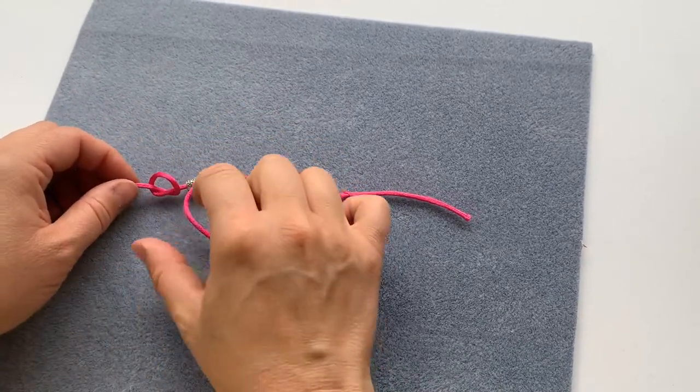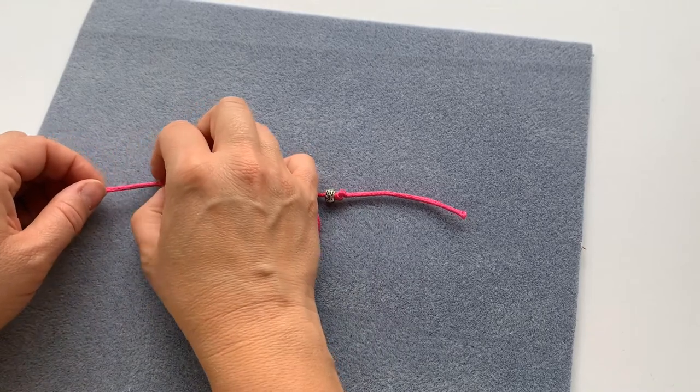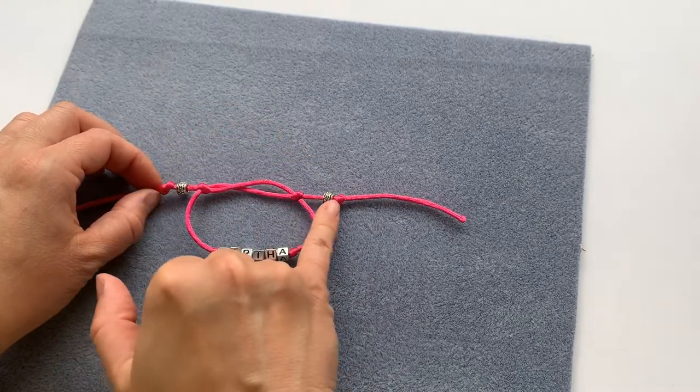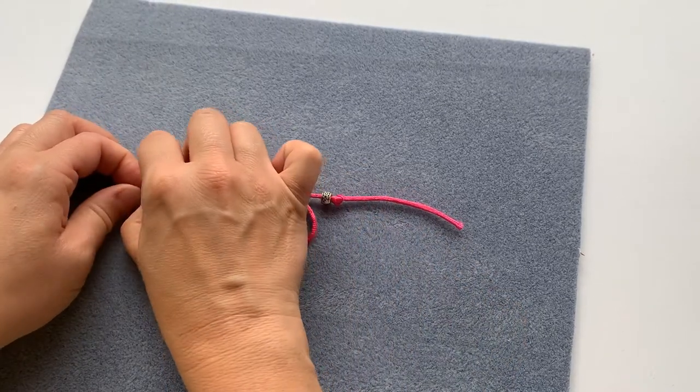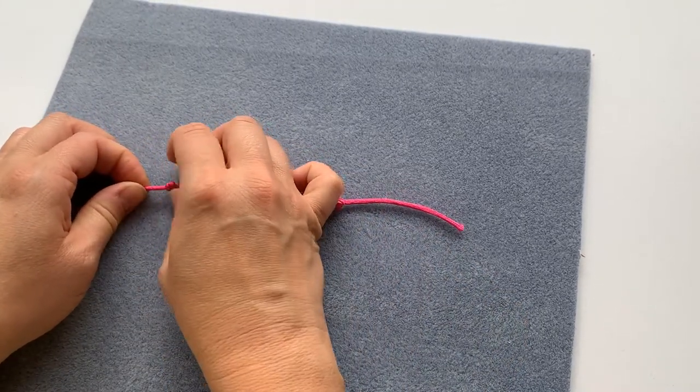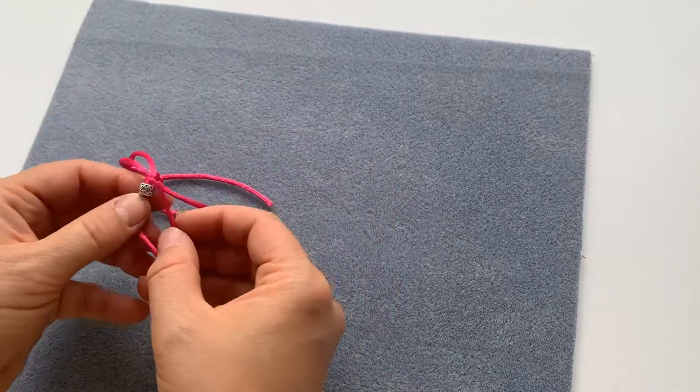And again tie another overhand knot, making sure the gap is roughly the same on both sides. Yeah, that will do, yep, that will do. And again, just going to tie a second knot.